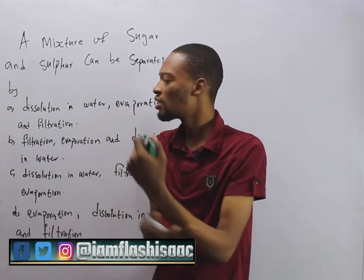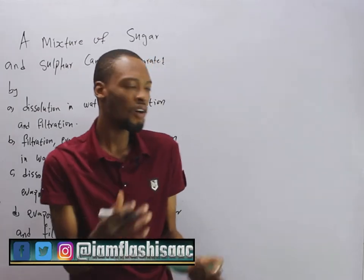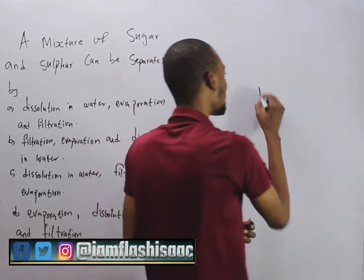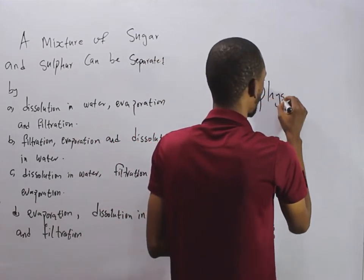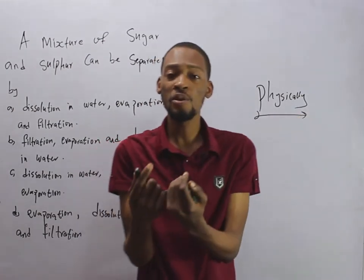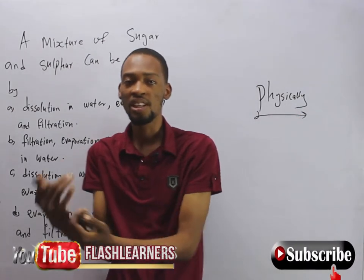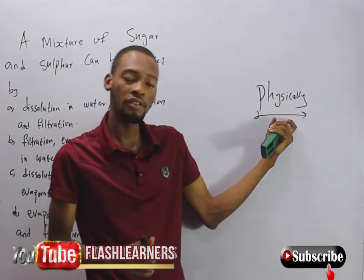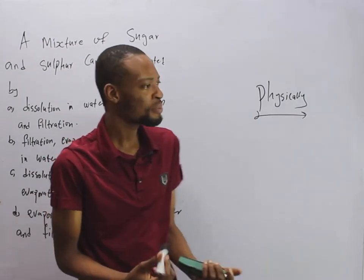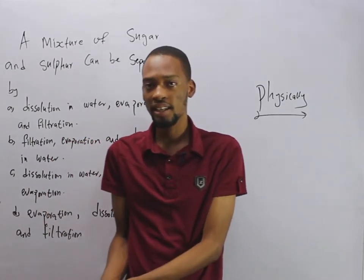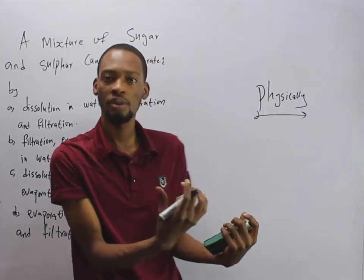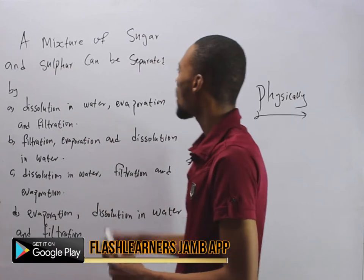Remember, a mixture contains elements and elements, or elements and compounds, or compounds and compounds combined physically. This means there is no chemical reaction involved in the formation of a mixture. This is the opposite of compounds. Examples of mixtures are sand and water.